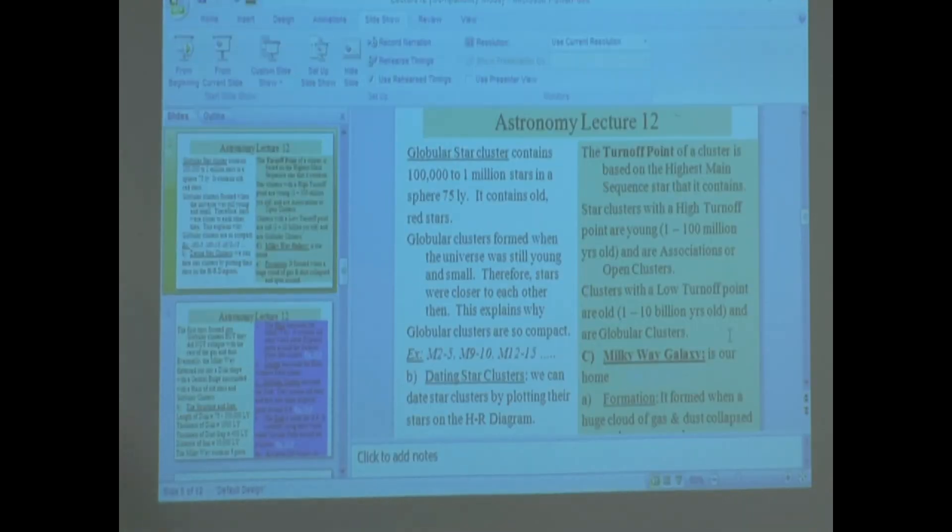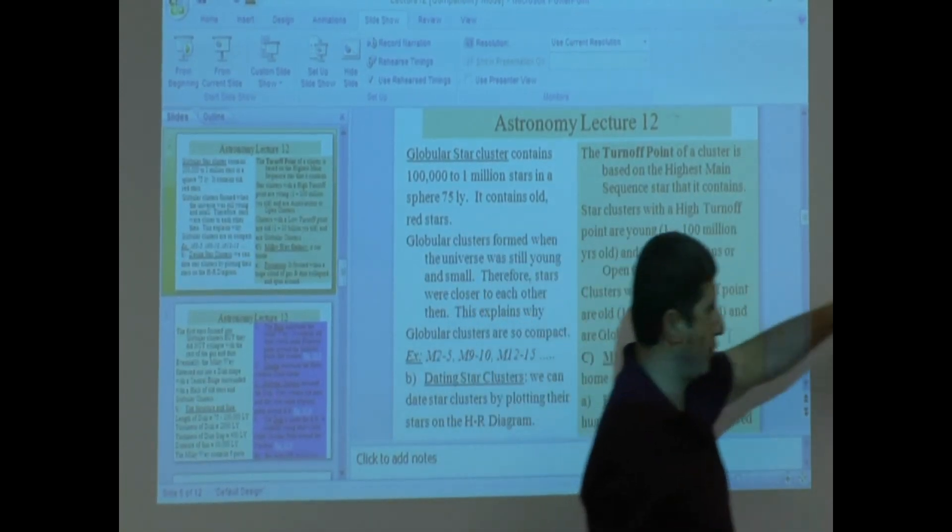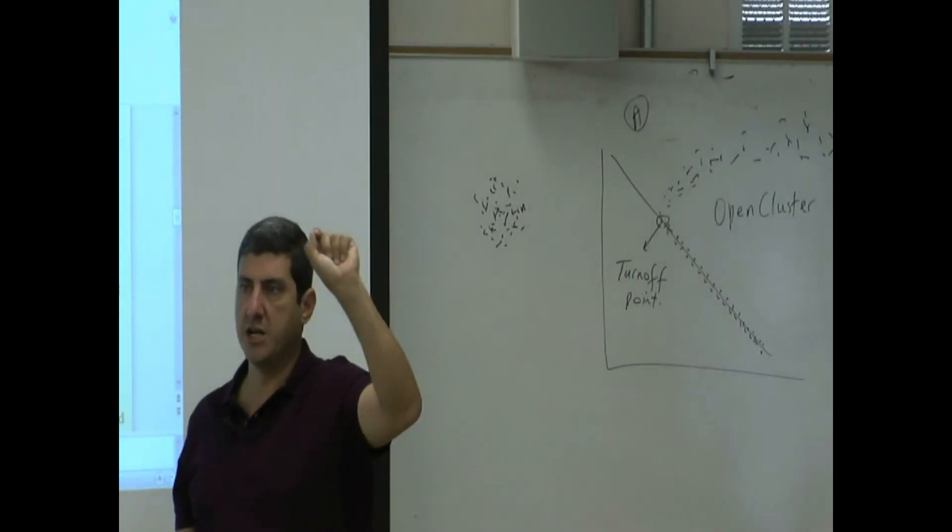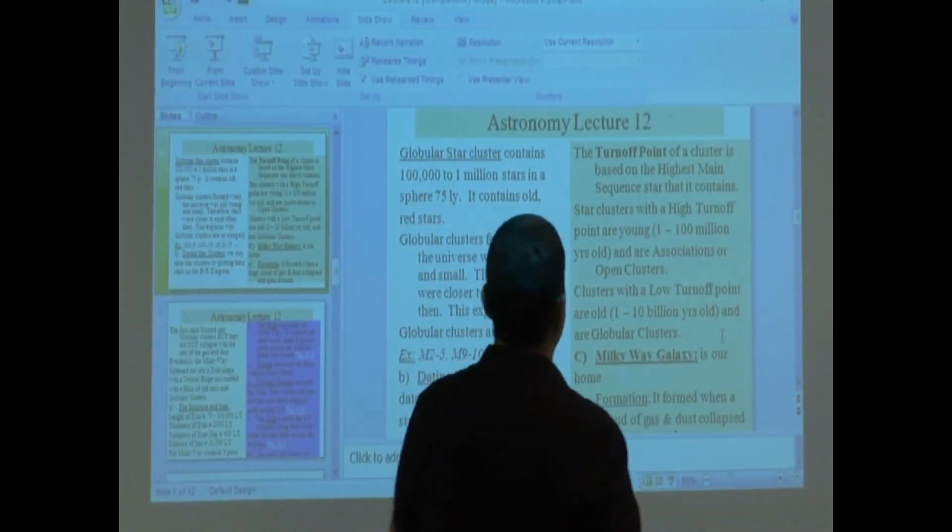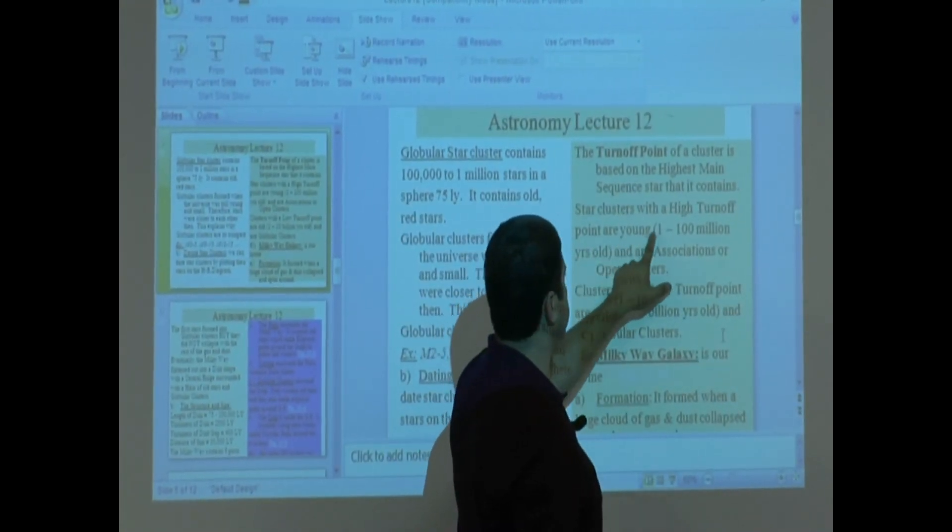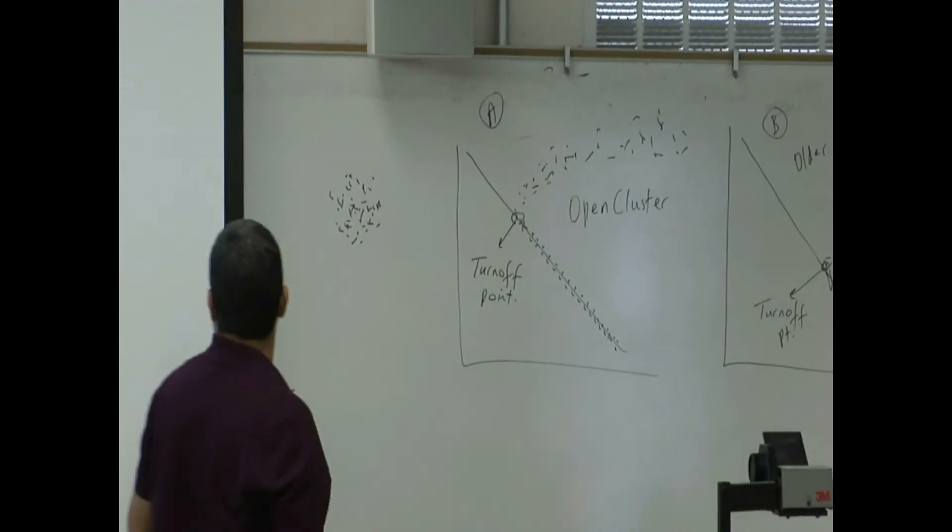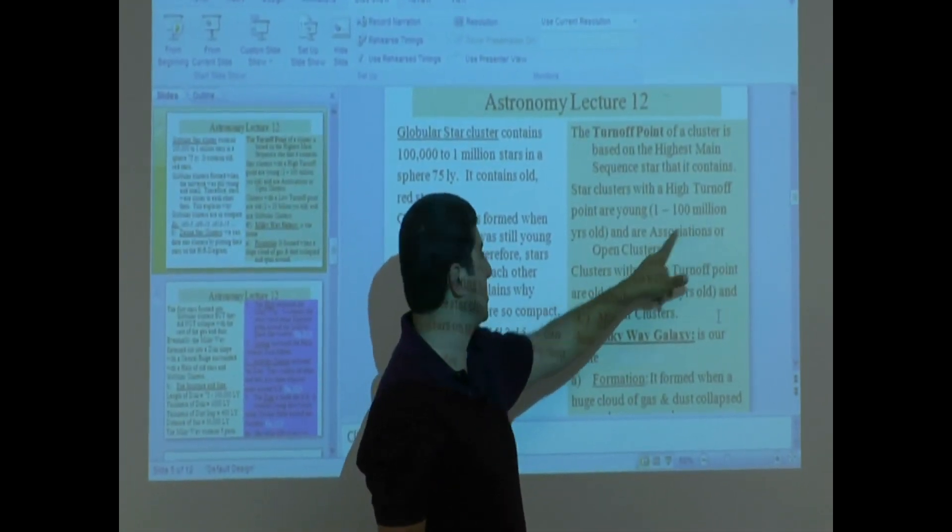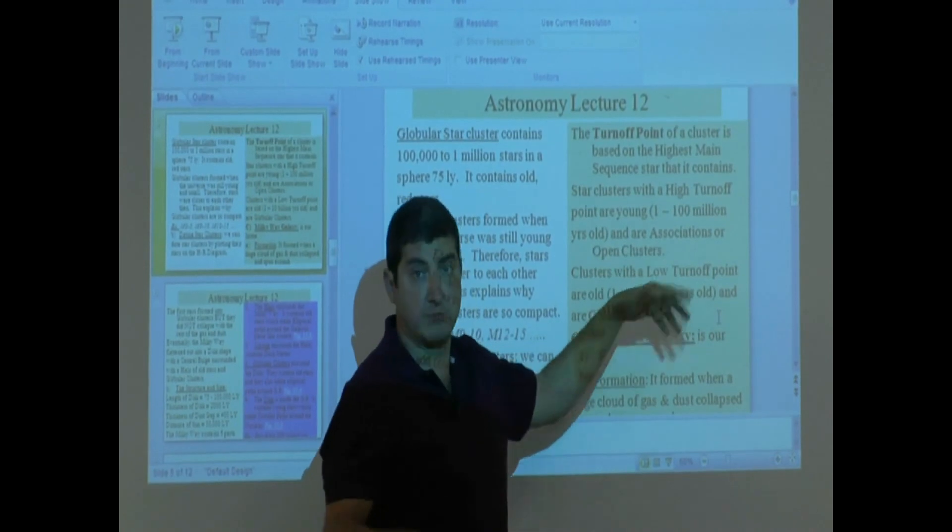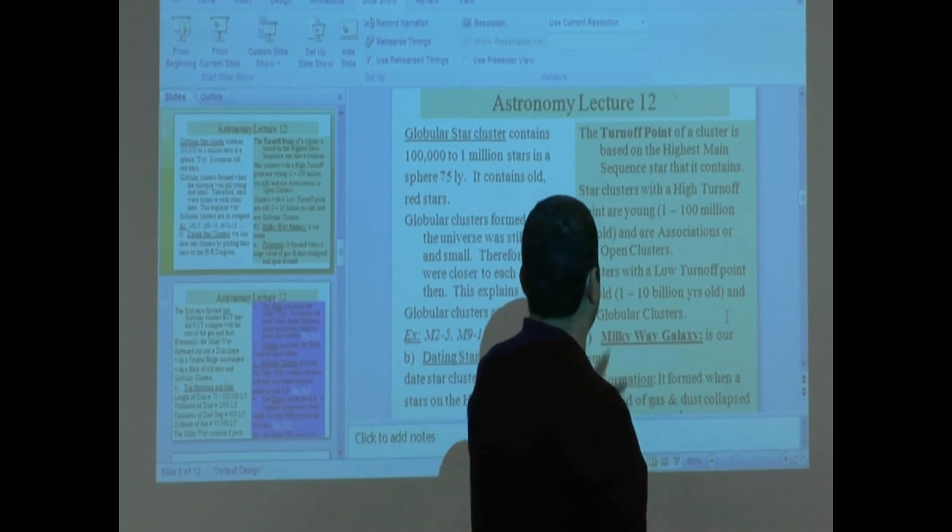So the turnoff point of a cluster is based on the highest main sequence star that it contains. That's the point that I'm talking about here. It's the highest star in there that hasn't started dying yet. Star clusters with a high turnoff point are young. The higher up here, they could be maybe from 1 million years old to 100 million years old, and are therefore more likely, I'm actually pretty sure they should be associations or open clusters.